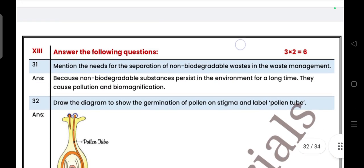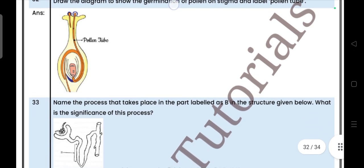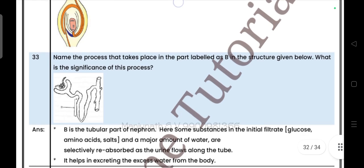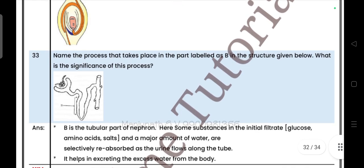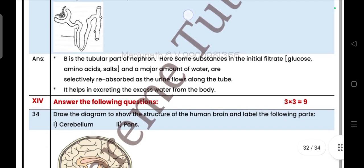Next, two mark questions. Mention the needs of separation of non-biodegradable waste from the waste we generate. Draw the diagram to show the germination of pollen on stigma and label the pollen tube. Name the process that occurs in the part labeled A and B in the structure given below. What is the significance of this process?